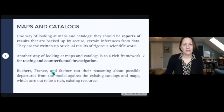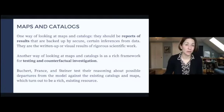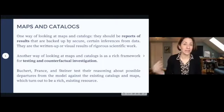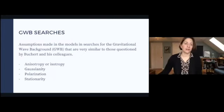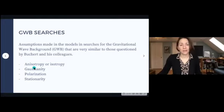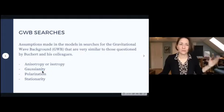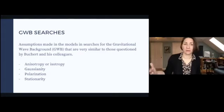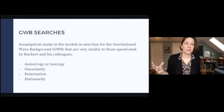One way of looking at maps and catalogs is as reports of results backed up by secure inferences from data. Another way — which I want to encourage in concluding — is as a rich framework for testing and counterfactual investigation. This is a lot of data embedded in maps of the underlying CMB and GWB and in catalogs of observing runs from LIGO, Virgo, CAGR, etc. The data is available for post-data analysis. There are also assumptions made in models for the gravitational wave background that are similar to those questioned by Boucher and colleagues: whether or not the radiation is isotropic or Gaussian, the polarization, and the stationarity of the radiation — all assumptions more or less supported by the data, but all testable.